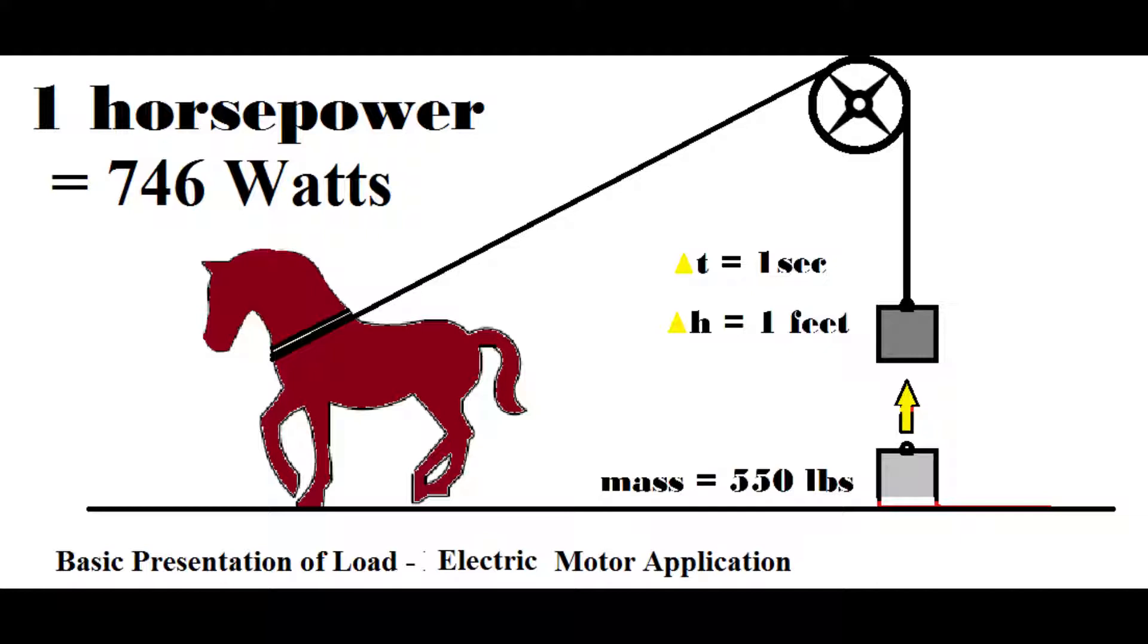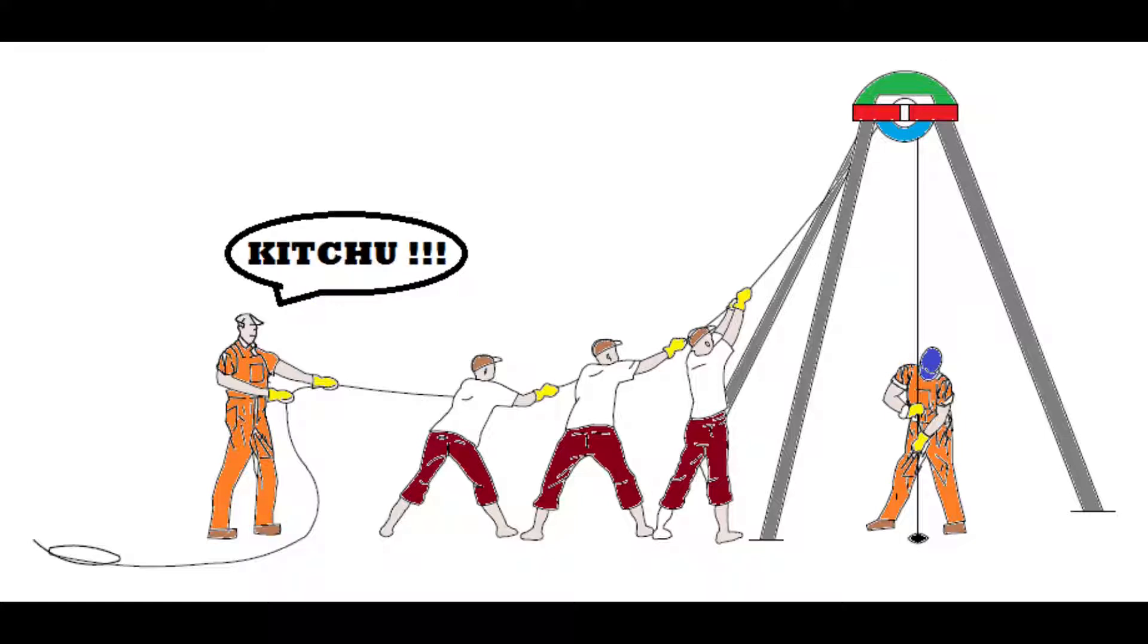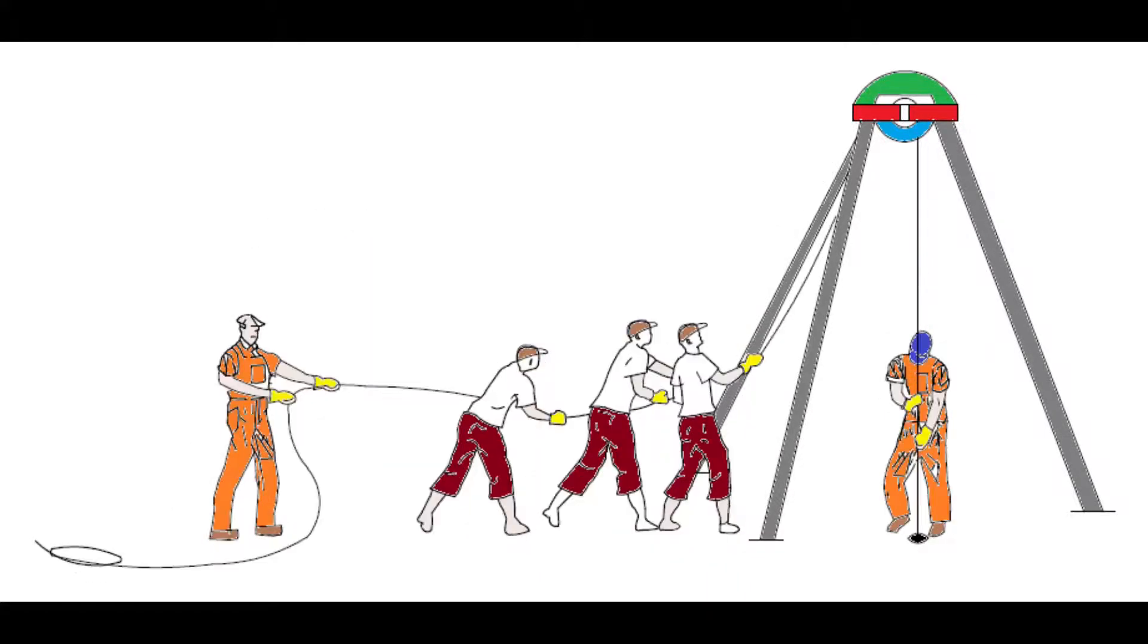First we have the basic presentation of load to electric motor application. To some of us who have taken physics in school, this is familiar: one horsepower equals 746 watts and it can lift almost 550 pounds. As you can see here, we will not include the friction in our computation from water, downside rock formation, pulley, and other external forces. We will leave friction to an expert to compute.